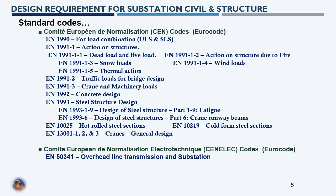EN 1991 covers actions on structures and has various sections: Part 1-1 is dead load and live load; Part 1-2 is action on structures due to fire; Part 1-3 is snow loads; Part 1-4 is wind loads; Part 1-5 is thermal actions. EN 1991 Part 2 covers traffic loads for bridge design, which is relevant when a cable trench or conduit runs below any access road or railroad.